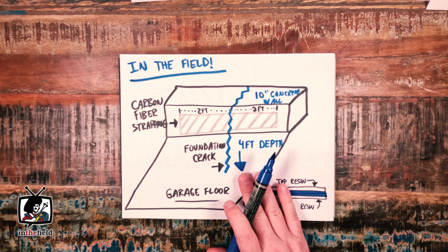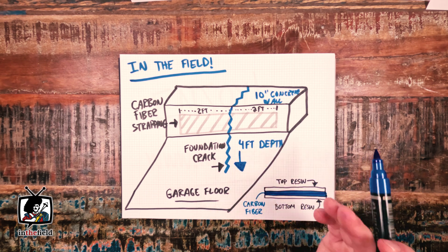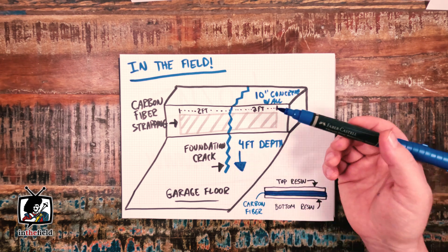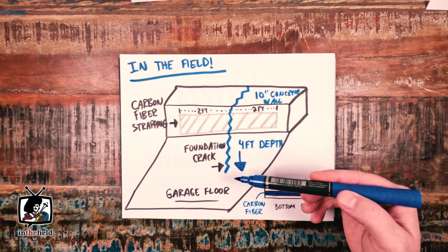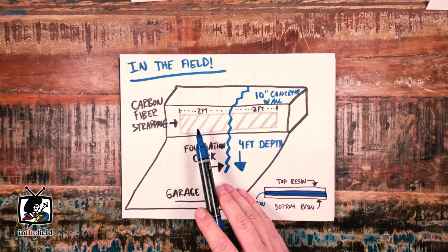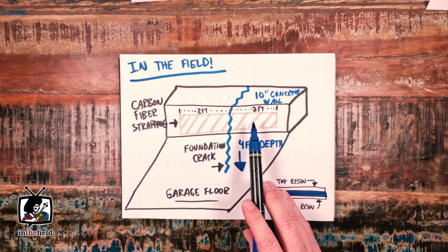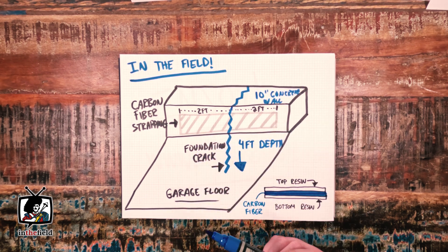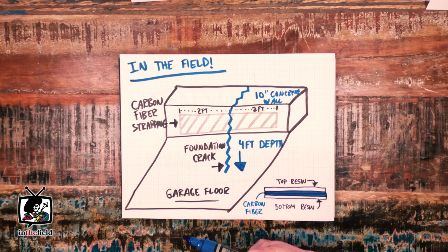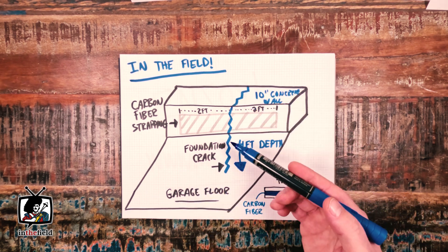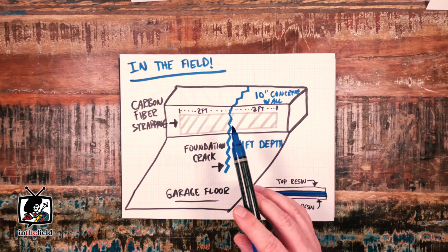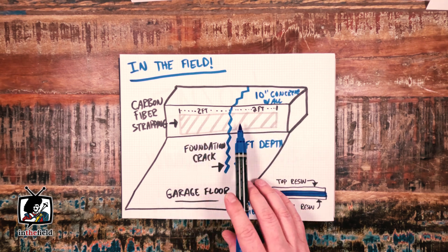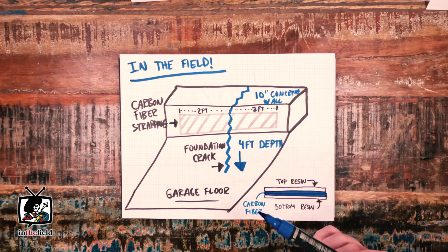This particular project was somewhat straightforward. The client reached out to us and had an issue with a foundation wall in a garage that was cracking vertically. We opted to install a strip of carbon fiber to act as a reinforcement mechanism for the cracked wall. Given that the crack was traveling vertically through the poured concrete wall, we installed a 4 foot by 6 inch wide strip of carbon fiber across the horizontal axis of that crack.